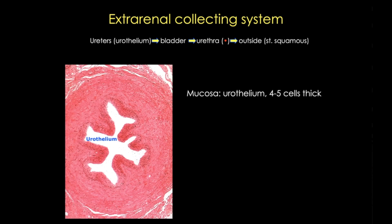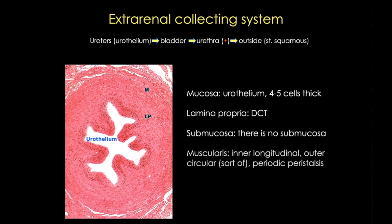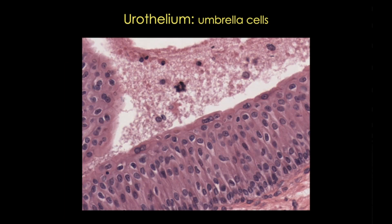The ureter has that specialized epithelium, or urothelium — here it's about four to five cell layers thick. It also has a lamina propria of dense irregular connective tissue, but it lacks a submucosa. It does have a relatively organized muscularis layer and undergoes periodic peristalsis. Finally, it has a connective tissue adventitial layer. Recall that urothelium contains specialized umbrella cells in its top layer, which function in expansion of the tissue.